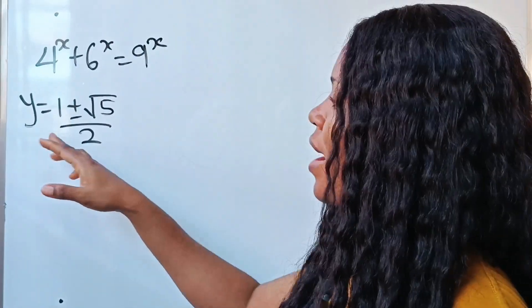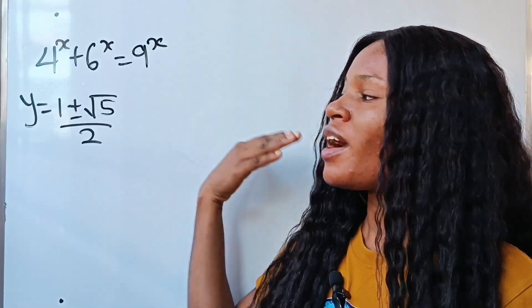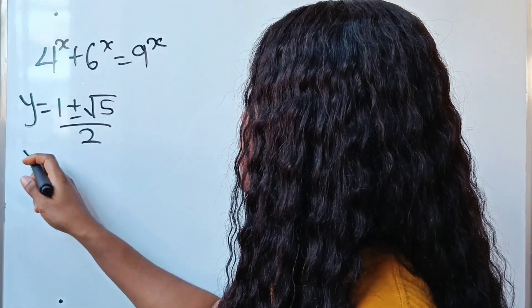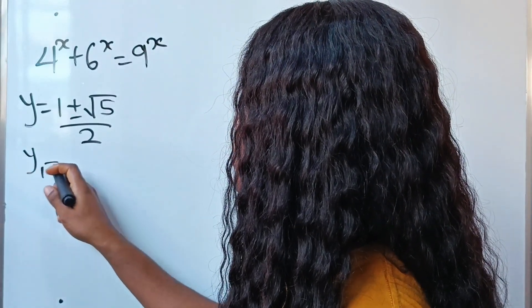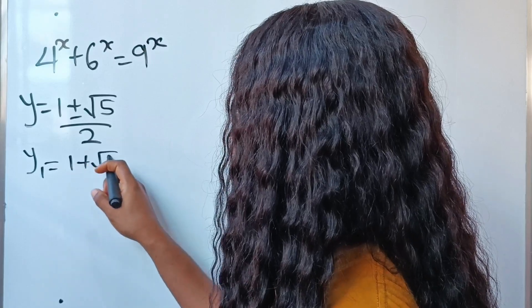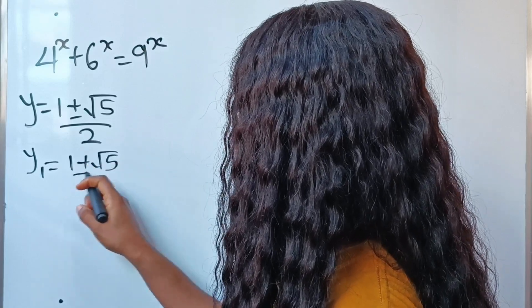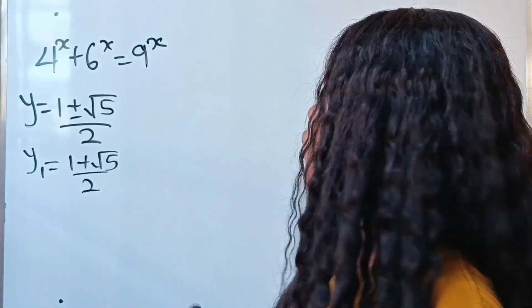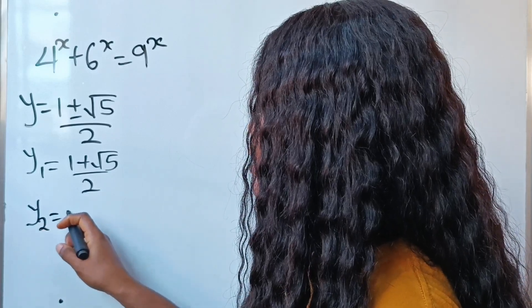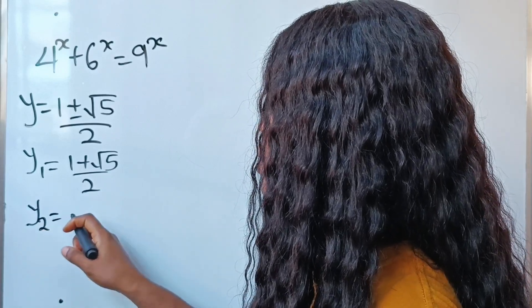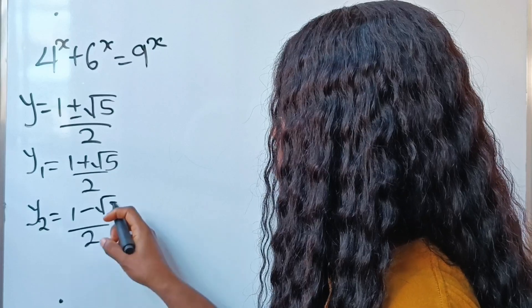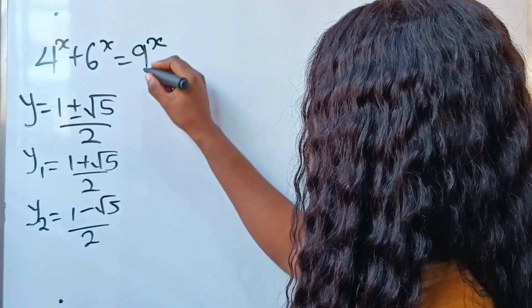So y equals 1 plus root 5 divided by 2. That means we have two values of y. The first value is y equals 1 plus root 5, divided by 2. And the second value is y equals 1 minus root 5, divided by 2.